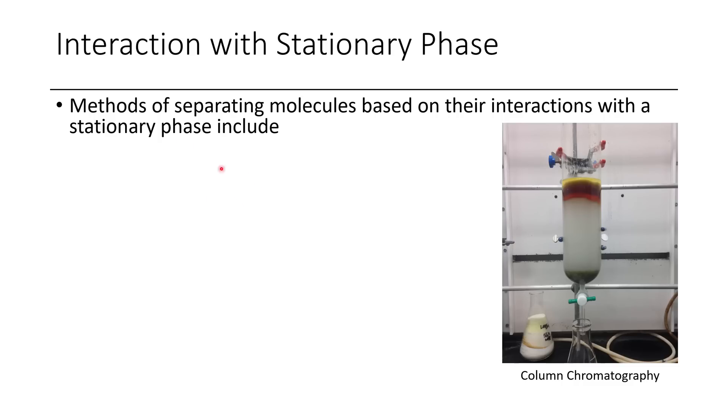A couple other things to discuss include the use of interaction with the stationary phase. Here we can see a chromatography column. This is a silica column. This is actually the separation of methylthionobenzoate. Alternatives to this include thin layer chromatography.